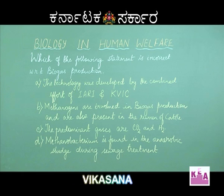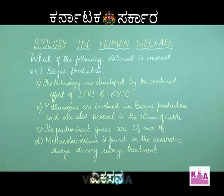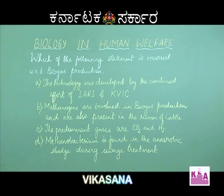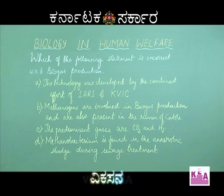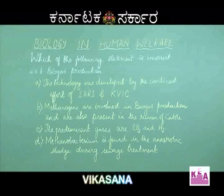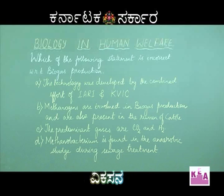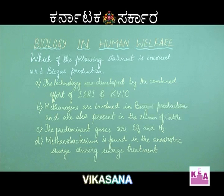The next question: Which of the following statements is incorrect with respect to biogas production? Statement A: the technology was developed by the combined effort of IARI and KVIC. Statement B: methanogens are involved in biogas production and are also present in the rumen of cattle. Statement C: the predominant gases are carbon dioxide and hydrogen. Statement D: Methanobacterium is found in the anaerobic sludge during sewage treatment.